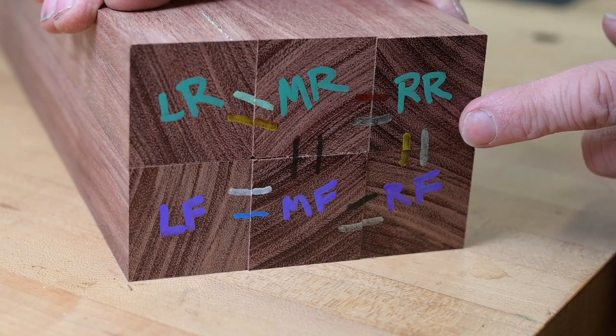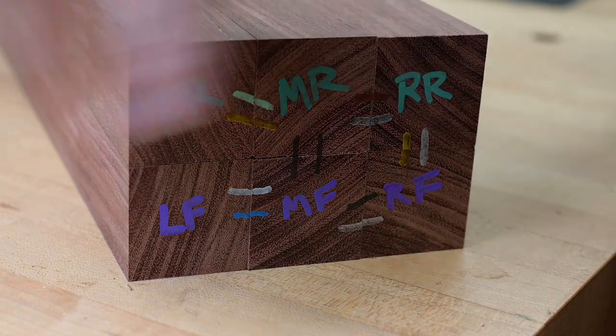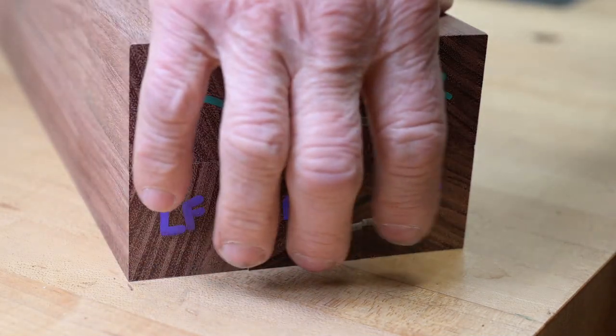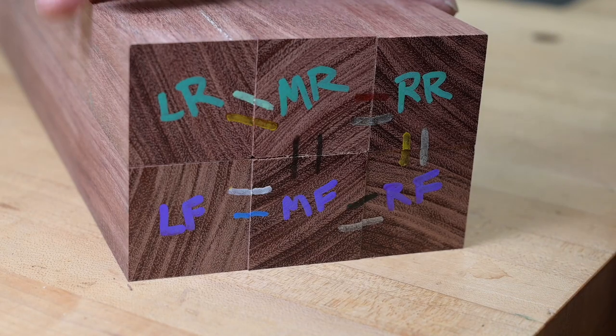And in order to do that, you can see I've got this lettering: left rear, middle rear, right rear, left front, middle front, right front. That gives me a verbal reference to where they go.